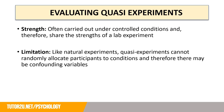The strengths and limitations of quasi-experiments are easy to remember because they are very similar to lab experiments in strengths and to natural experiments in limitations. One strength is that they are often carried out under controlled conditions, sharing the strengths of a lab experiment — such as high control over extraneous variables and the ability to identify cause and effect. As a limitation, just like natural experiments, quasi-experiments cannot randomly allocate participants to conditions, so there may be confounding variables.